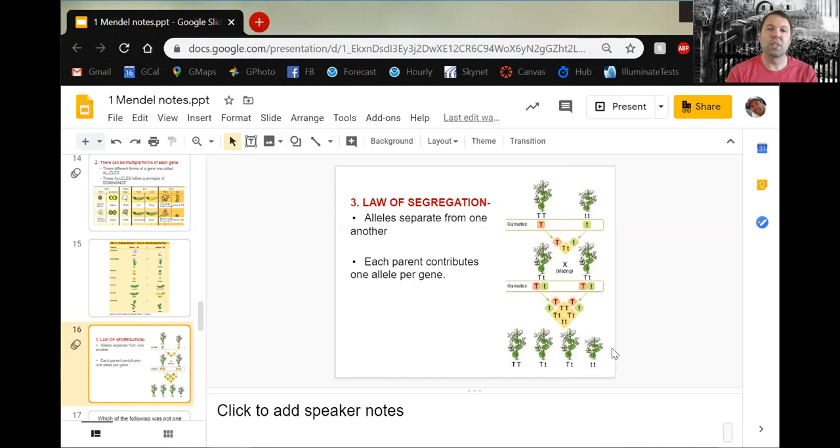The third conclusion here is the law of segregation. This is the idea that the alleles are going to separate from one another before they're passed on to the offspring. You get half of your alleles from mom and half from dad. These alleles will separate to form the sperms or eggs. Plants have sperms and eggs as well. The sperms would be inside the pollen grains and the eggs would be inside the ovule at the base of the flower.